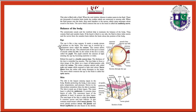The semi-circular canals and the vestibule help to maintain the balance of the body. They contain fluid and sensitive hair. If the head is tilted to one side, the fluid in these tubes moves and the nerves from the sensitive hair inform the brain about the position of the body.